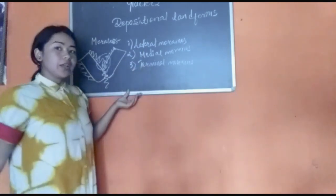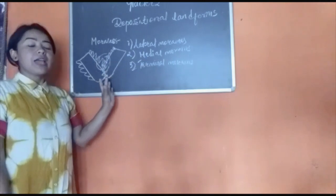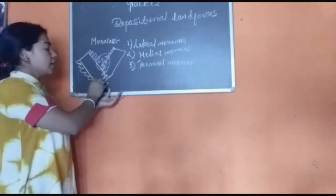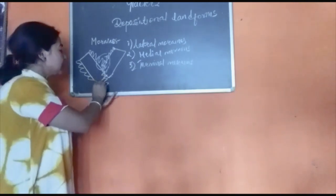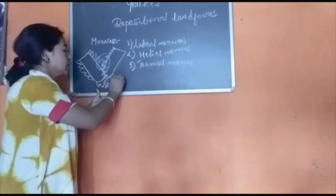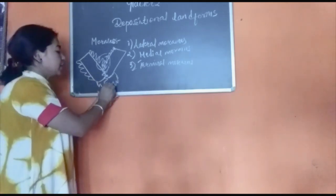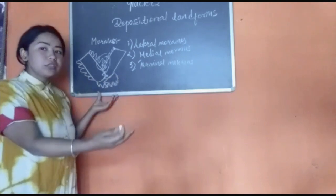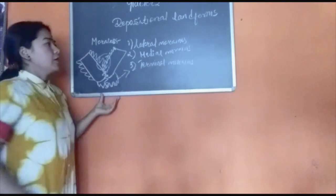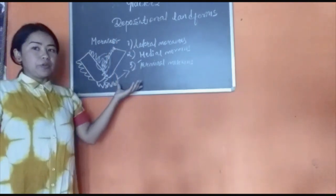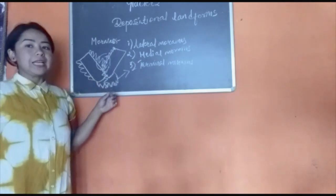Next we have the terminal moraine. There is an end to the glacier at some point. When the glacier reaches its end, it starts depositing the sediments towards the front side. These sediments at the front of the glacier are known as terminal moraines. These are the three types of moraines that we find as depositional features of glacier landforms.